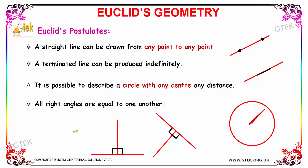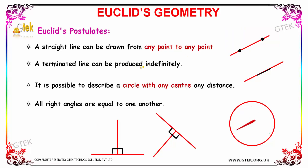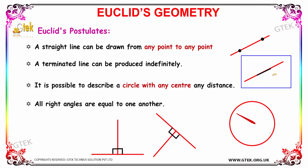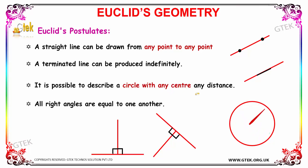Now let's see Euclid's postulates in detail. The first postulate states that a straight line can be drawn from any point to any point. The second postulate states that a terminated line can be produced indefinitely. A terminated line can be produced indefinitely on both sides.